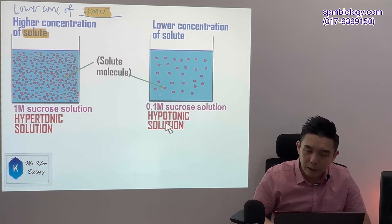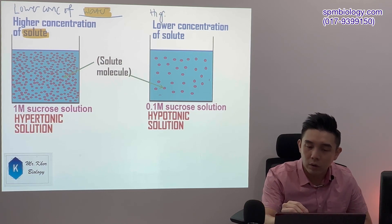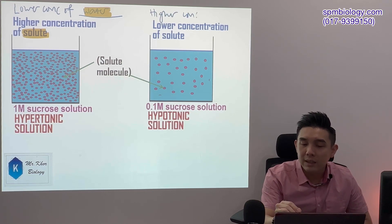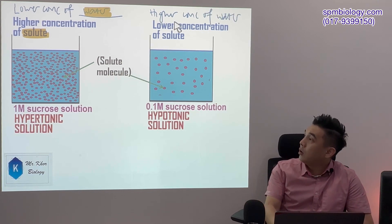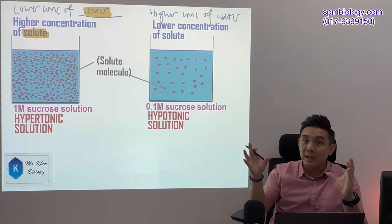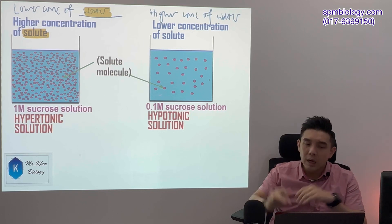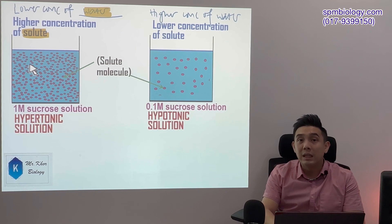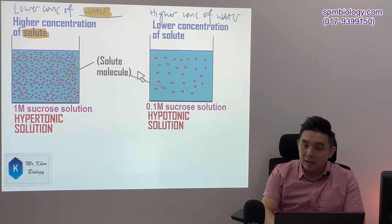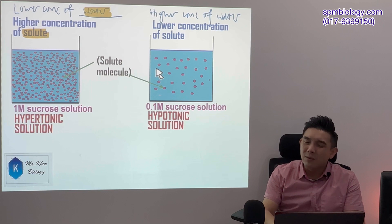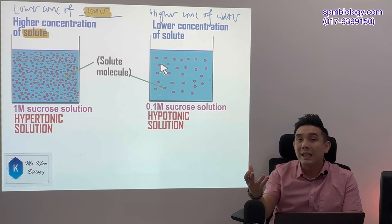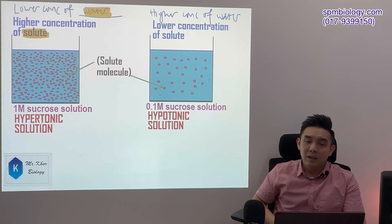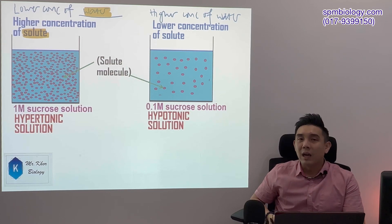So if we know hypertonic, we automatically know hypotonic: lower concentration of solute, higher concentration of water. This makes sense — for the same amount of space, if there is more sucrose, there is less water. But if there is less solute, there is automatically more water.